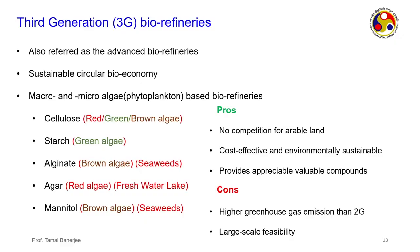Third generation bio-refineries, also referred to as advanced bio-refineries, have a sustainable circular bio-economy. These 3G bio-refineries are mainly water-based. I classify them into two types: macro and microalgae. Macro means growing algae in a large open water source, while microalgae such as phytoplankton cannot be seen by the naked eye — both are clubbed together. Red algae come primarily from freshwater lakes, brown algae mainly from seaweeds, while green algae come from macroscale lakes and ponds.